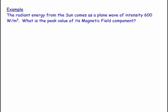This question says the radiant energy from the Sun comes as a plane wave of intensity 600 watts per square meter. What is the peak value of the magnetic field component? We can picture sunlight coming as a plane wave with an E component and a B component.